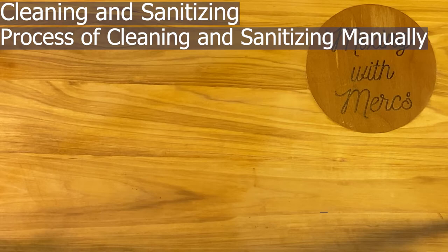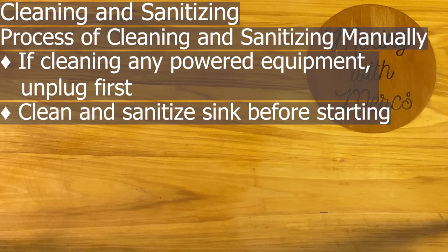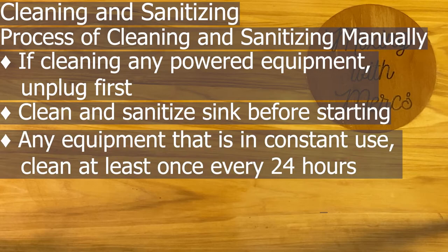For any food contact surfaces, there are a few guidelines. First, if you're cleaning any powered equipment, unplug it first — this is injury prevention. Any time you're washing dishes by hand, clean and sanitize your sink first to avoid introducing additional bacteria. Finally, any equipment in constant use — like ice cream machines, nacho cheese dispensers, or drink machines — needs to be cleaned at least once every 24 hours.